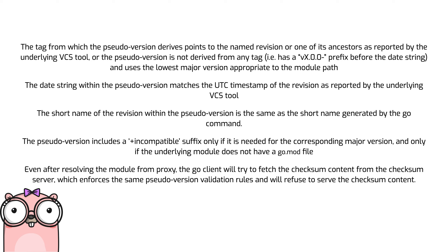The tag from which the pseudo version derives points to the named revision or one of its ancestors, as reported by the underlying VCS tool. Or the pseudo version is not derived from any tag — that is, it has a vX.0.0- prefix before the date string — and uses the lowest major version appropriate to the module path. The date string within the pseudo version matches the UTC timestamp of the revision as reported by the underlying VCS tool. The short name of the revision within the pseudo version is the same as the short name generated by the go command. The pseudo version includes a plus incompatible suffix only if it's needed for the corresponding major version, and only if the underlying module does not have a go.mod file. And even after resolving the module from a proxy, the go client will try to fetch the checksum content from the checksum server, which enforces the same pseudo version validation rules and will refuse to serve the checksum content.